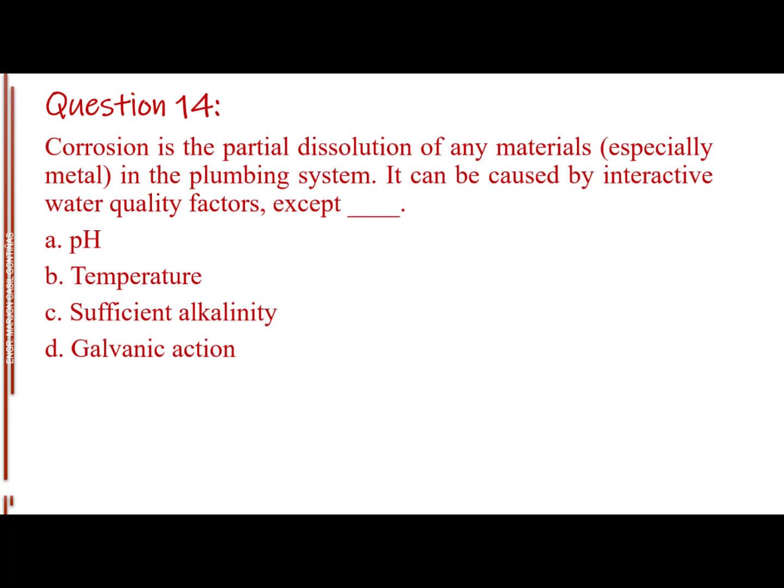Question number 14. Corrosion is the partial dissolution of any materials, especially metal, in the plumbing system. It can be caused by interactive water quality factors, except blank. Letter A, pH. Letter B, temperature. Letter C, sufficient alkalinity. Letter D, galvanic action. The answer is Letter C, sufficient alkalinity.